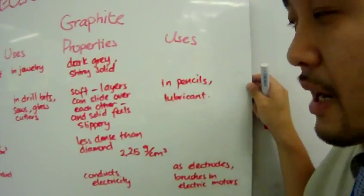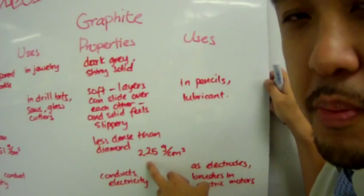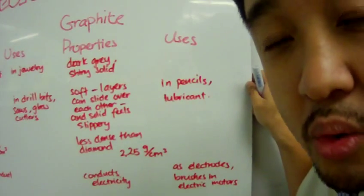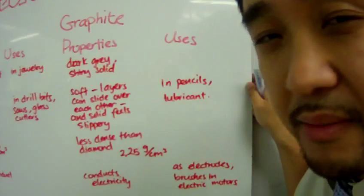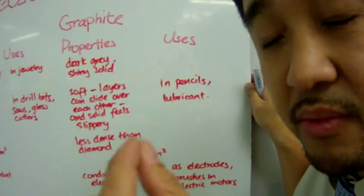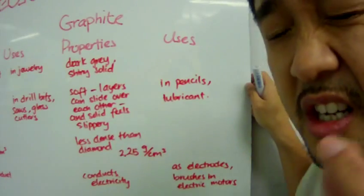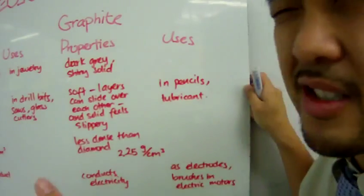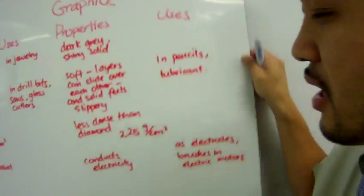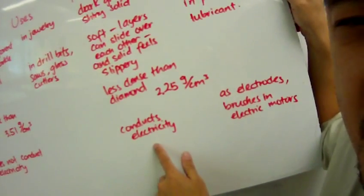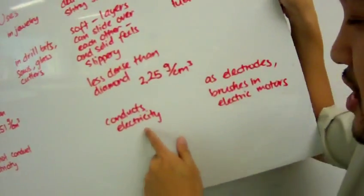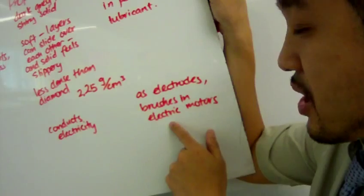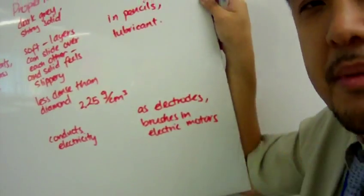Density. Graphite is less dense than diamond. Value: 2.25 grams per cubic centimeter. And because of the graphite's free electrons, each carbon now has one free electron each. So, a ton of carbons in graphite means tons of free electrons. And those free electrons means electricity. It conducts electricity, and it's used as electrodes in electrolysis and also as brushes in electric motors. That's it.